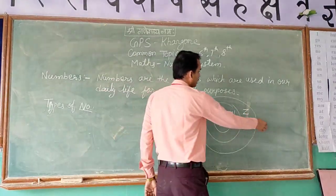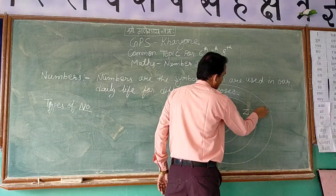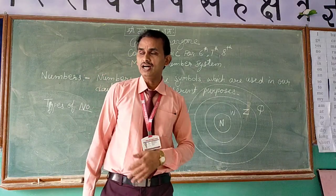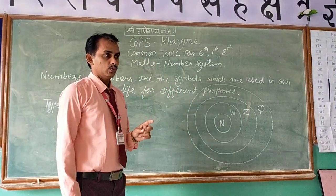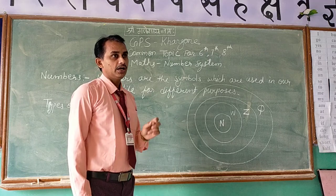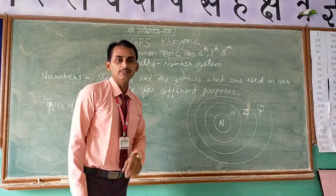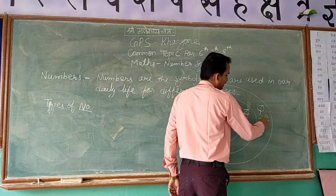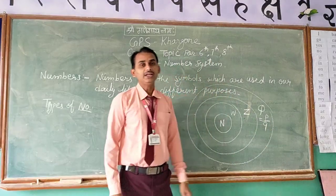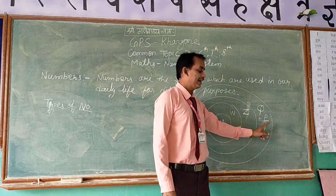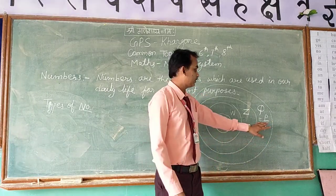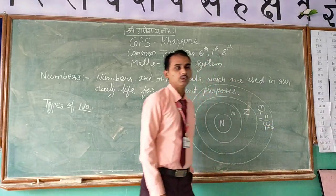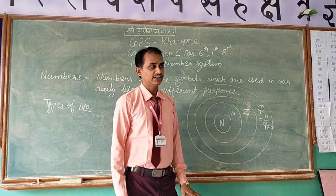The next group is rational numbers, represented by Q. The definition of rational numbers: if we can represent any number in the form of P over Q, where P and Q are integers and Q is not equal to 0, then such a group of numbers is called a rational number.